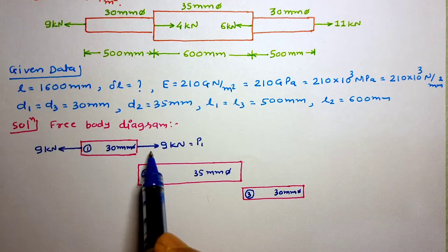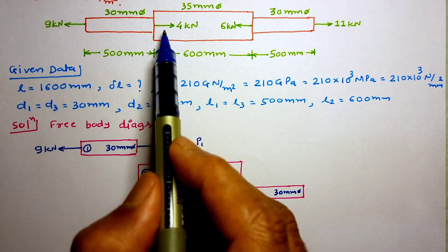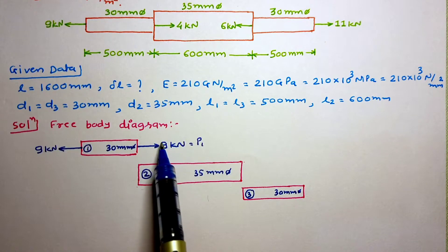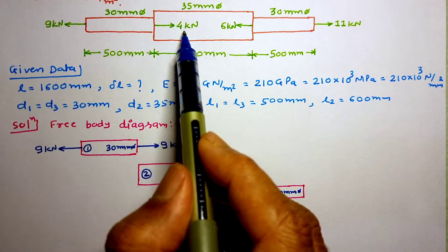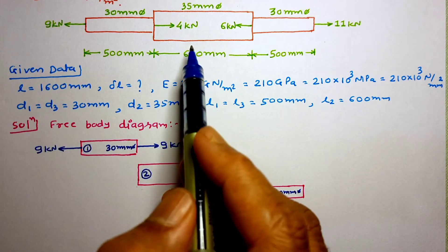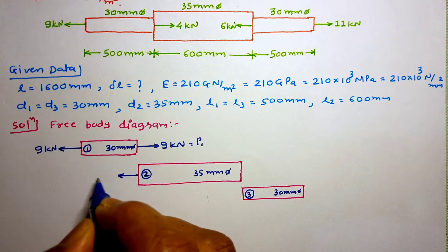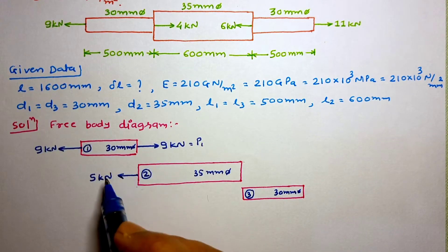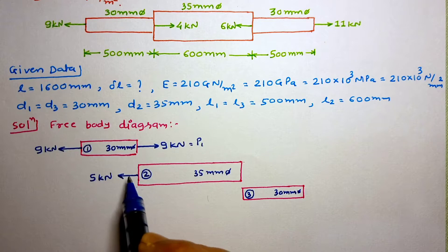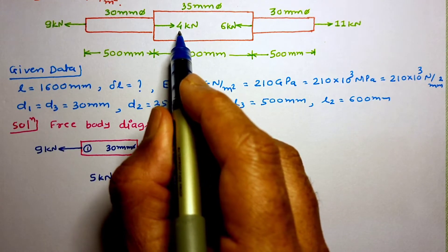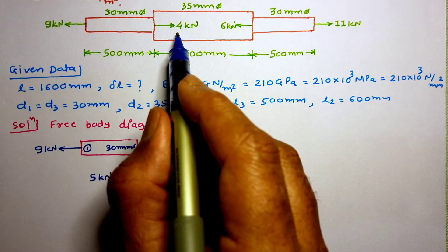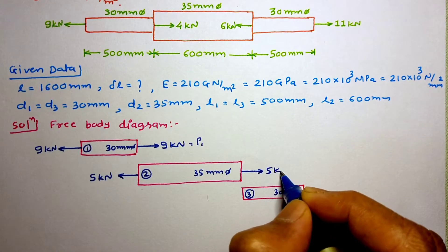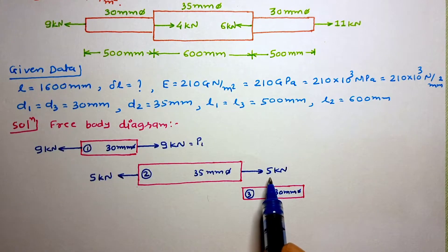We applied 9 kN, but the given force is only 4 kN, so we need to add or subtract some force. To get 4 kN, we apply 5 kN in the opposite direction: 9 kN (right) minus 5 kN gives 4 kN on the right-hand side. Now we continue to balance this 5 kN force by applying 5 kN in the opposite direction, making it a 5 kN tensile force.